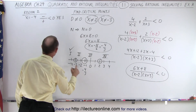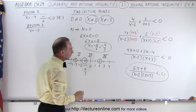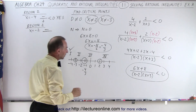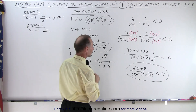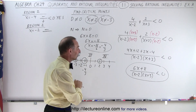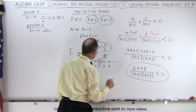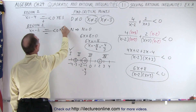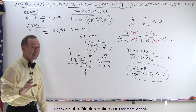Region 2: let's pick x equals negative 2. In the numerator, negative 2 times 6 is minus 12, plus 8 is still a negative number. In the denominator, negative 2 minus 2 is negative 4 — that's negative; negative 2 plus 3 is positive 1 — that's positive. Negative times positive is negative, so the denominator is negative. Negative over negative gives a positive result — is that less than 0? No, because a positive number cannot be less than 0. So region 2 is not part of the solution.